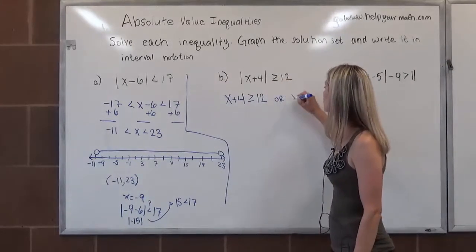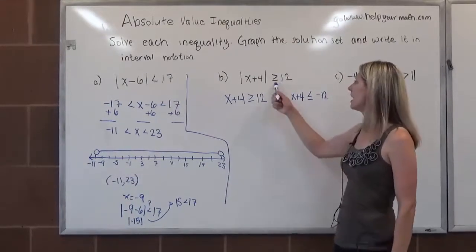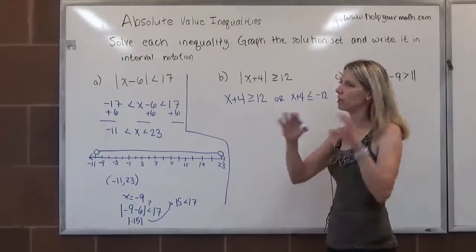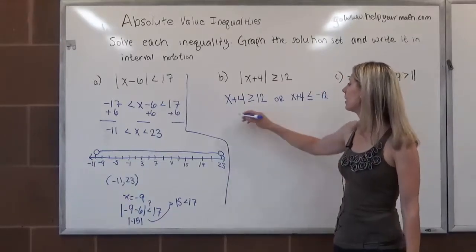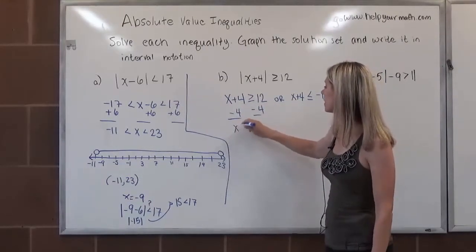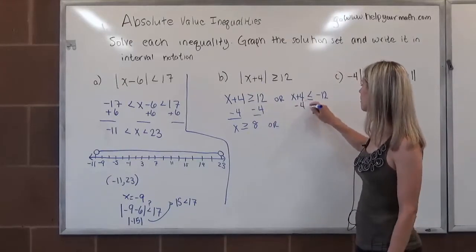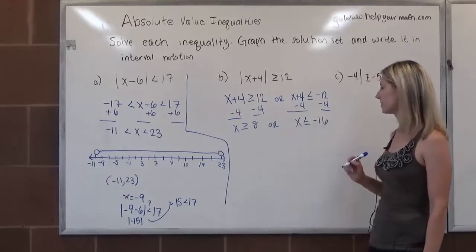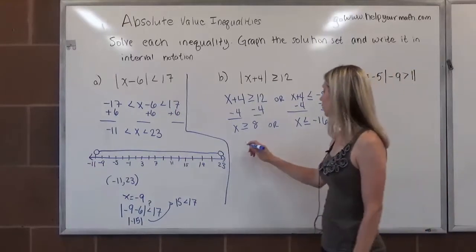x plus 4 could be greater than or equal to 12, or x plus 4 could be less than or equal to negative 12. Anytime we see the greater, think greater or—it's going to be an or situation. There's going to be two distinct solution sets. We want to solve each one. So we're going to take away 4 from both sides of the first inequality. Then we have x is greater than or equal to 8. Or over here, we're going to take away 4 from both sides, and we get x is less than or equal to negative 16.